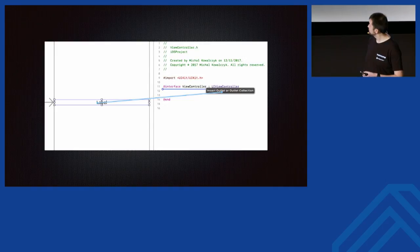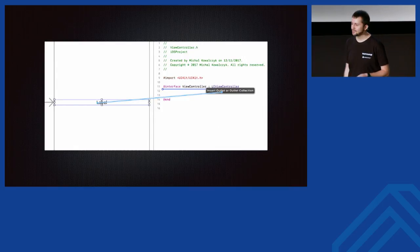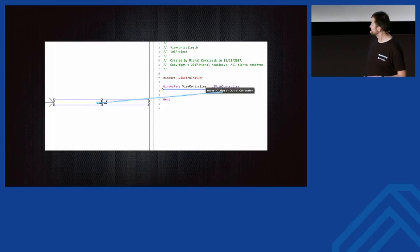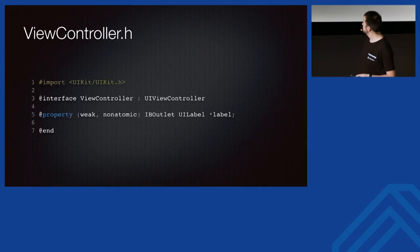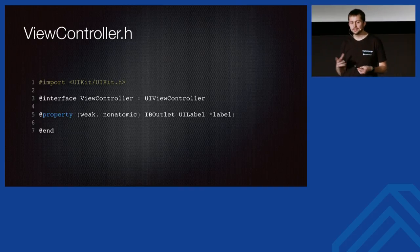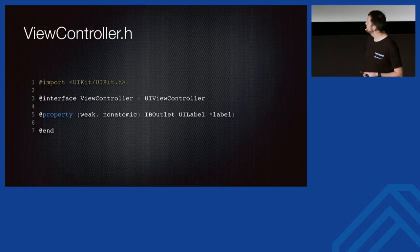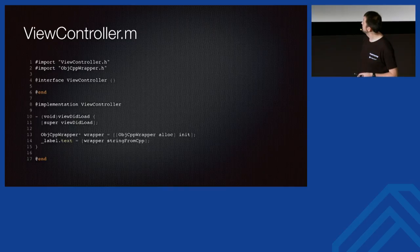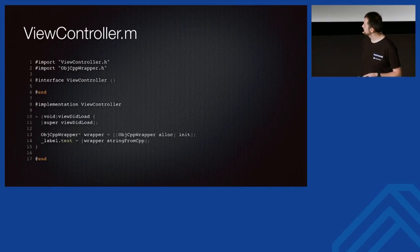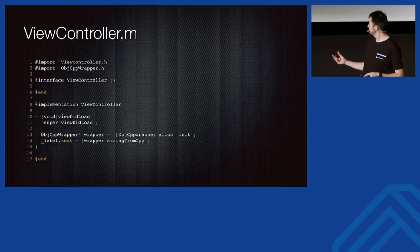To link a control to your code, you use a visual tool — it might feel like magic at first but is quite convenient. You visually link a control to a specific file where you'll use it. In the View Controller interface, Objective-C is based on C, so there are header files and implementation files. Implementation files in Objective-C use the .m suffix. In line 14 you assign to the label's text property the value returned from a stringFromCpp() call, which is part of the Objective-C++ wrapper.